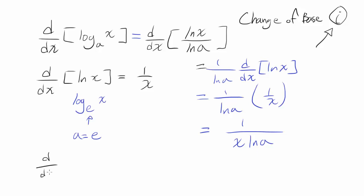So let's try one example. Derivative of log base 2 of x. This is going to be 1 over x times natural log of a, which in this case is 2.